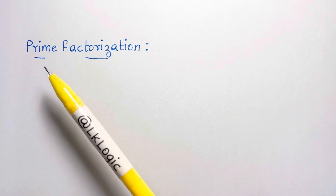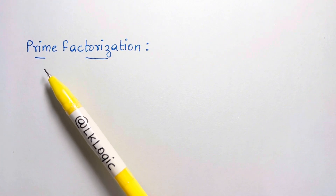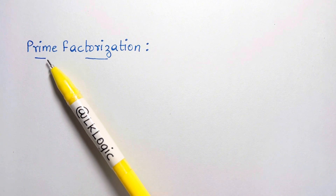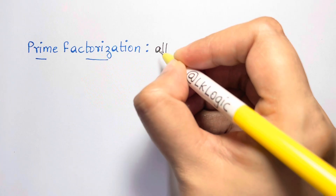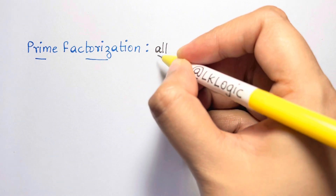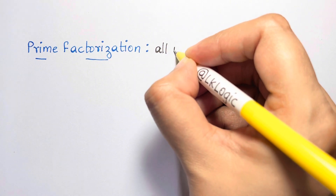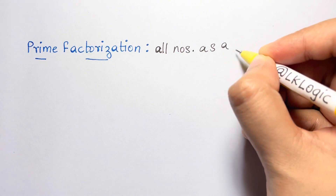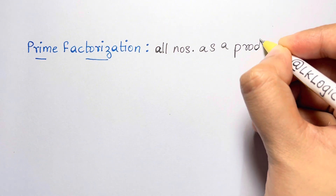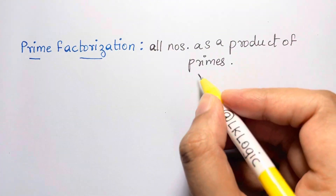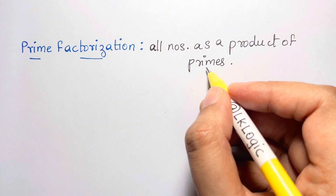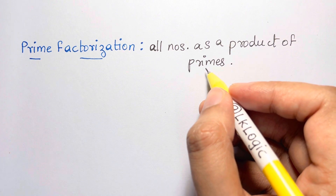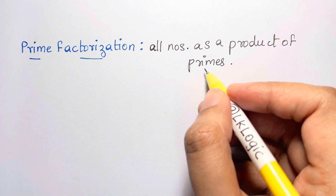Hi guys! First, to understand how to find HCF and LCM, you need to understand what prime factorization is. Prime factorization is a process of writing all numbers as a product of primes. Prime numbers are numbers which are divisible only by themselves.